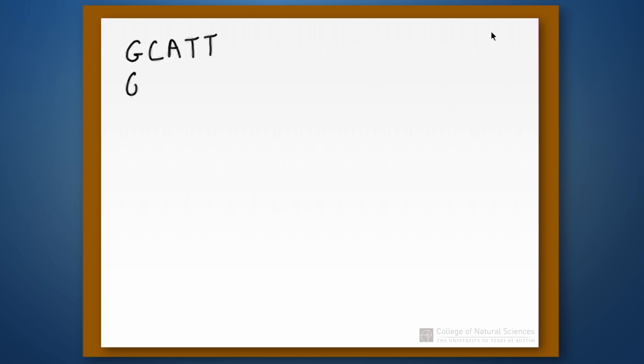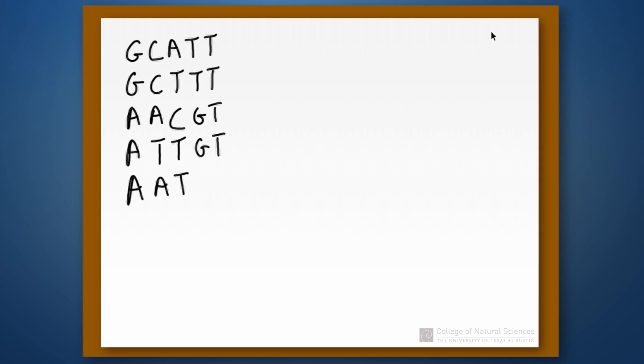Let's start with five different sequences from different species. The first will be G-C-A-T-T, the second G-C-T-T-T, the third A-A-C-G-T, the fourth A-T-T-T-G-T, and the fifth A-A-T-T-A. Each represents a different species: species 1 through 5. If we have five different species, there are 15 different unrooted phylogenetic trees. We're not going to go through all 15, but let's work through one example of figuring out the number of steps on the tree.